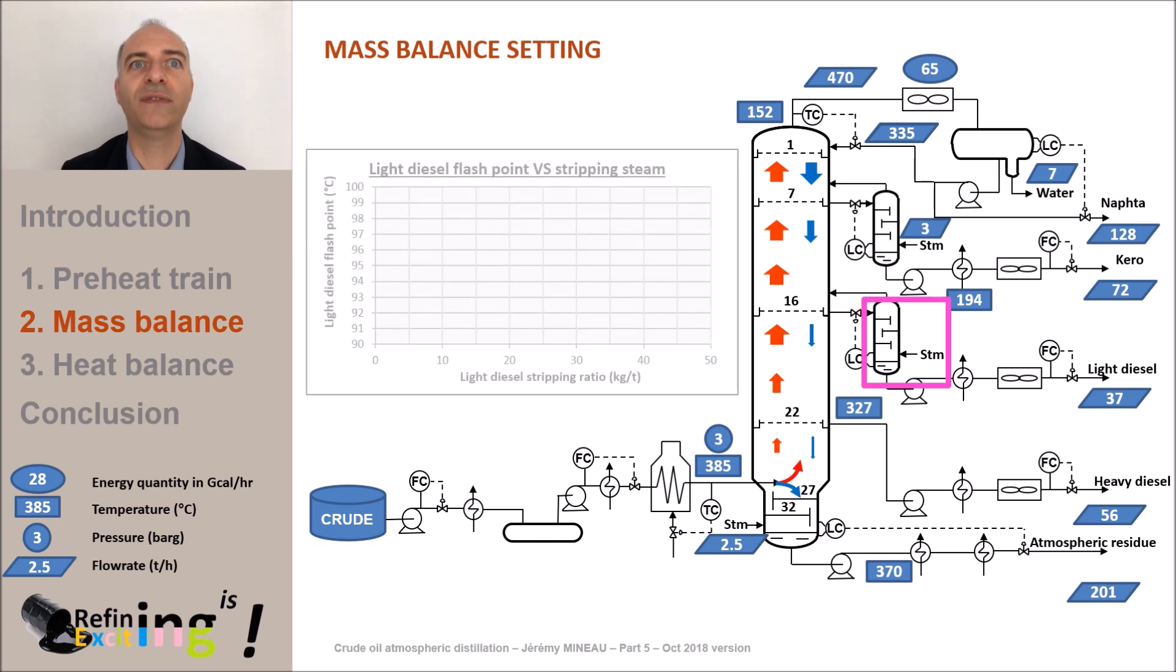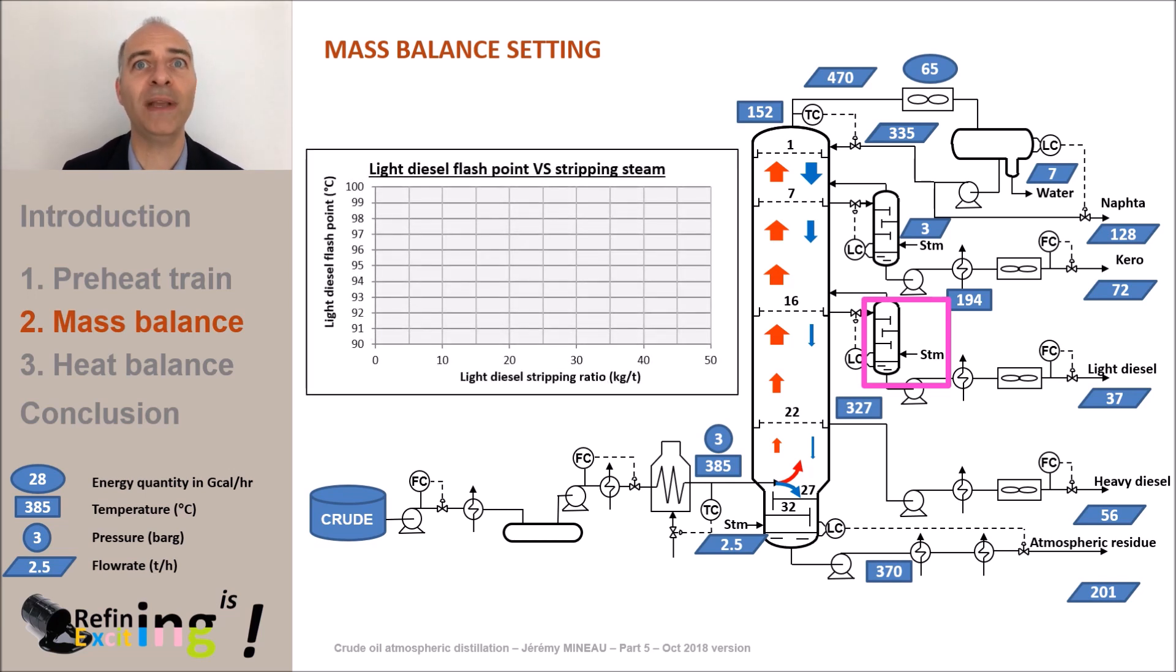Indeed, as we see on this graph, when we increase the stripping steam of the light diesel cut, we increase the flashpoint of light diesel. This is due to the fact that the stripping steam has re-entrained the lightest molecules of light diesel towards the kerosene cut.